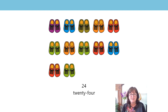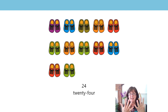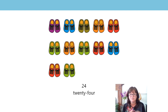Let's see if we can just count it quickly then. Let's skip count in twos as we go: two, four, six, eight, ten, twelve, fourteen, sixteen, eighteen, twenty, twenty-two, twenty-four. Twenty-four shoes and I had ten and two more — I had twelve pairs of shoes. Excellent job.